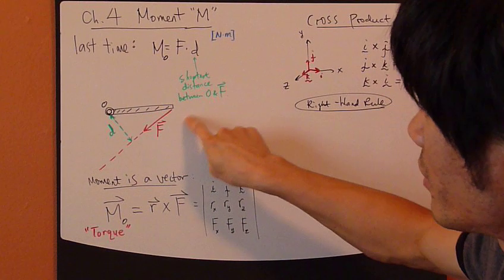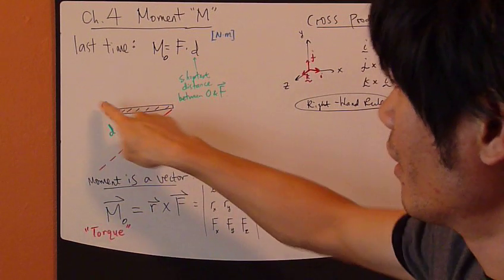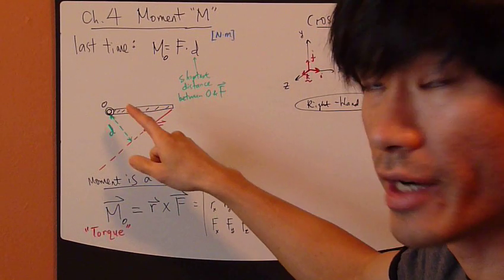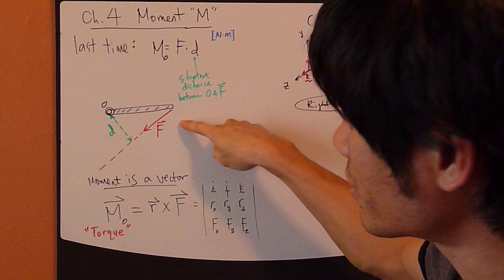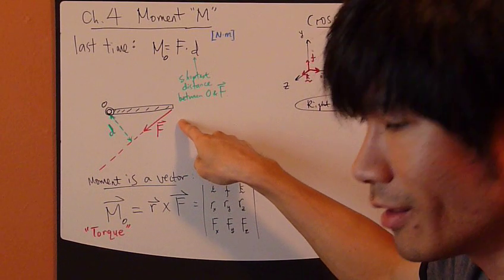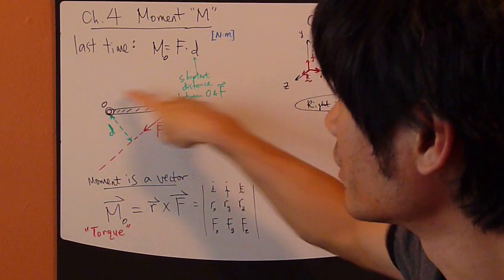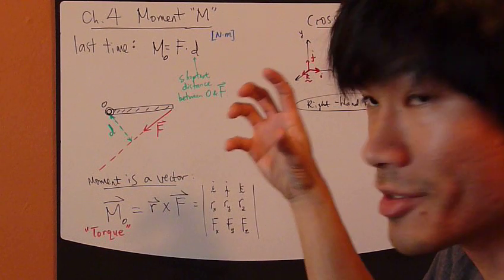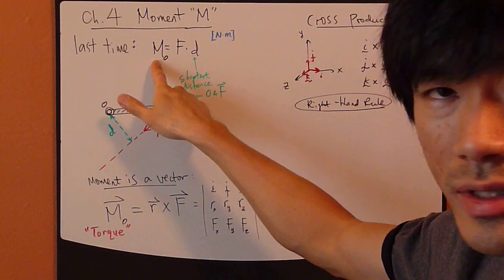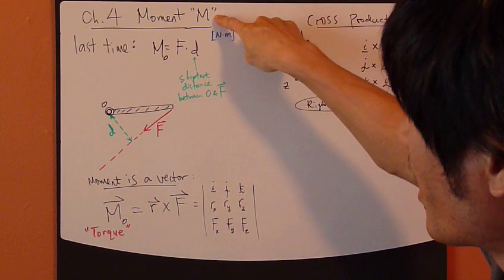So you have a force being applied on the rigid body, anywhere on the rigid body. Now, this force will have a tendency to want to make this object rotate. So this tendency is measured by moment. It has symbol M.